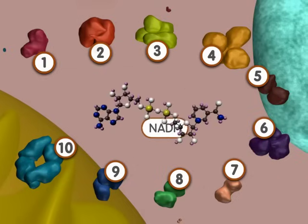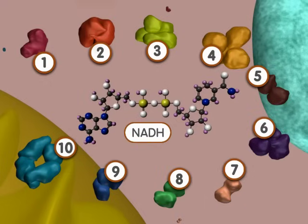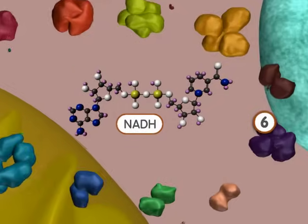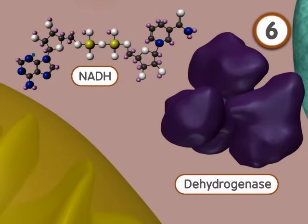There is one more key product of glycolysis to consider, called NADH. NADH is formed in the sixth reaction by an enzyme called a dehydrogenase.